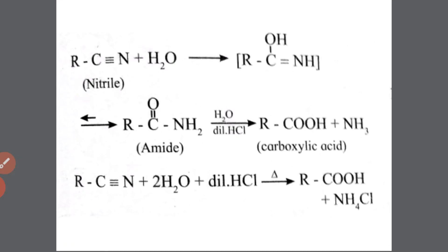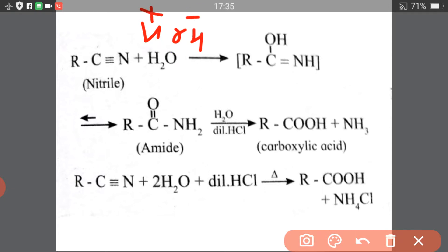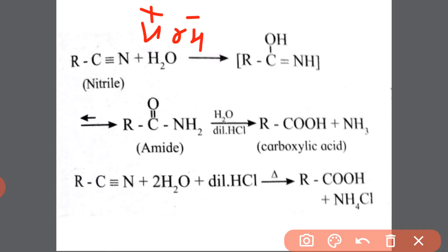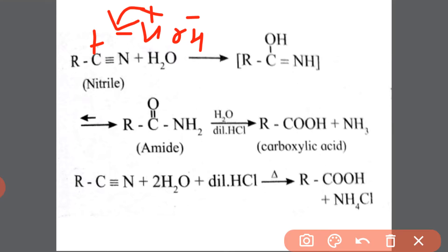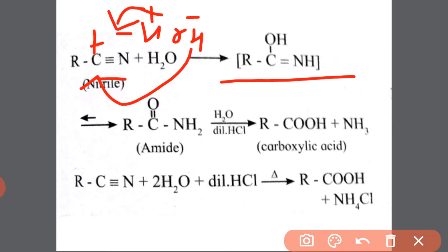RCN, which means nitrile, reacts with water — H⁺ and OH⁻. In nitriles, carbon is positively charged and nitrogen is negatively charged, because in the periodic table nitrogen is more electronegative than carbon. So this positively charged hydrogen will approach toward the negatively charged nitrogen, and OH⁻ will approach toward the positively charged carbon. The intermediate product formed is RC(OH), and this triple bond is reduced to a double bond.